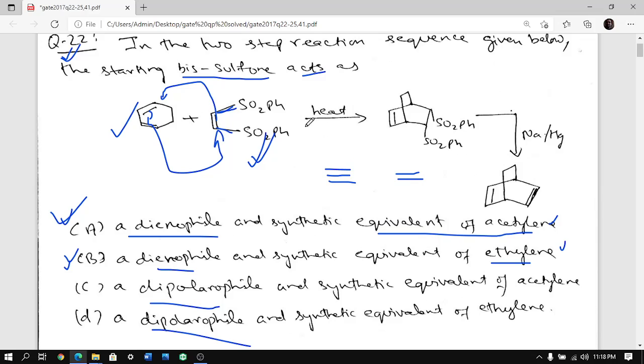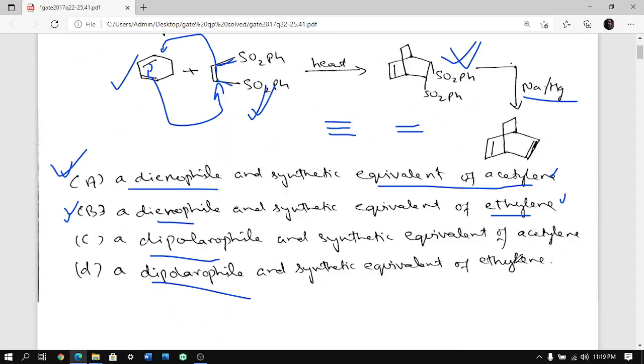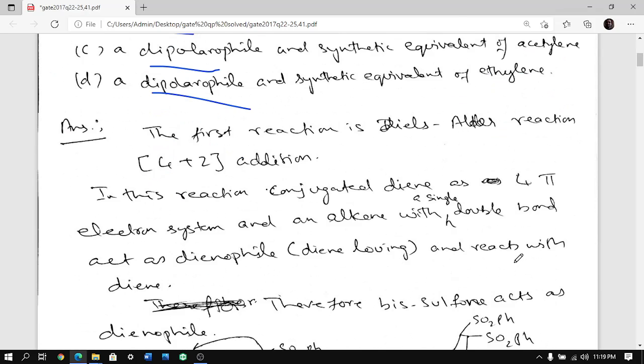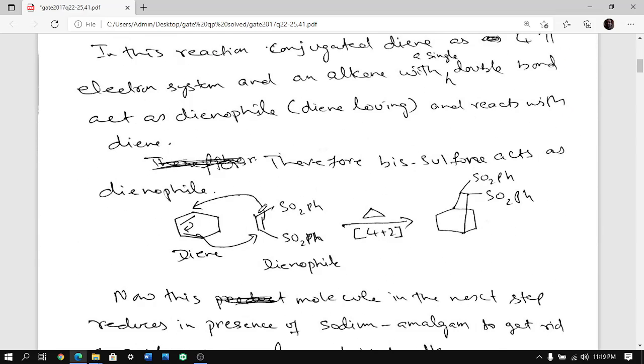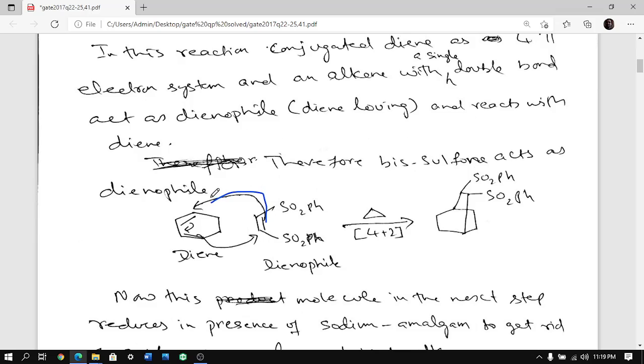So you see here first it undergoes Diels-Alder reaction. You get this product and you use sodium amalgam to remove this SO2Ph and you get double bond. So then we will find out what it is - acetylene equivalent or ethylene equivalent. First step is Diels-Alder reaction, no doubt about it. So this is dienophile.